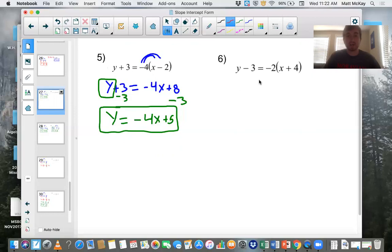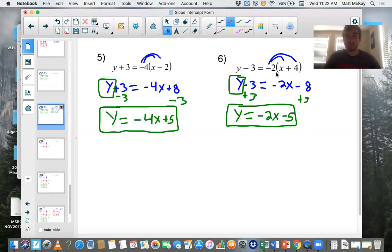Number six, try this one and then I'll show you how to do it. Again, same thing, distribute negative two to both terms, negative two x, negative eight. Box it in. Opposite of minus three is add three. Do it to both sides and here is your answer.